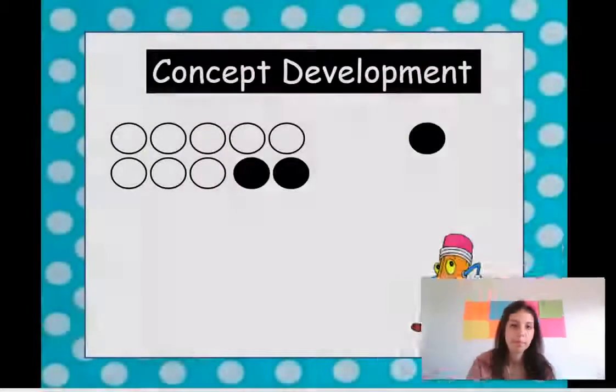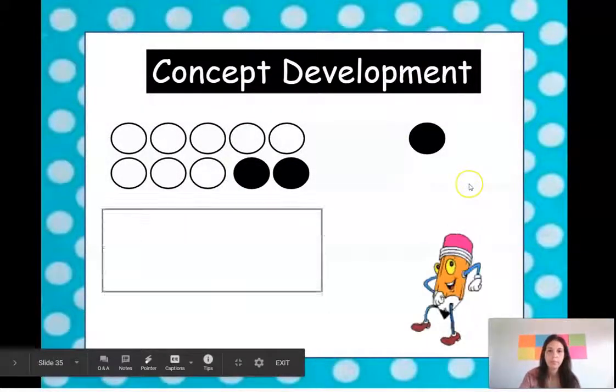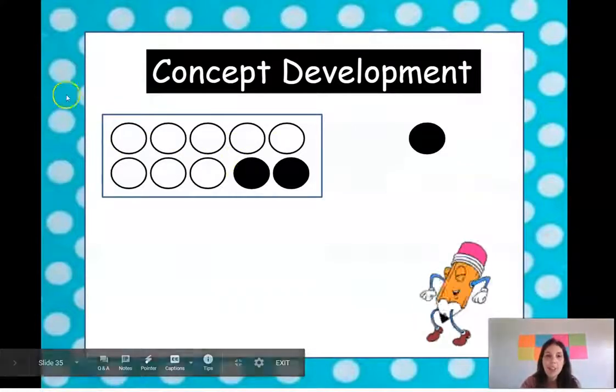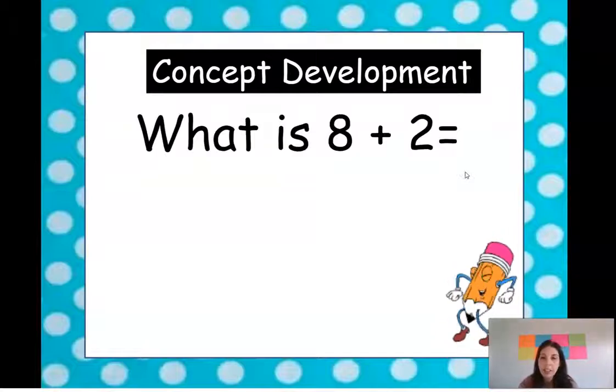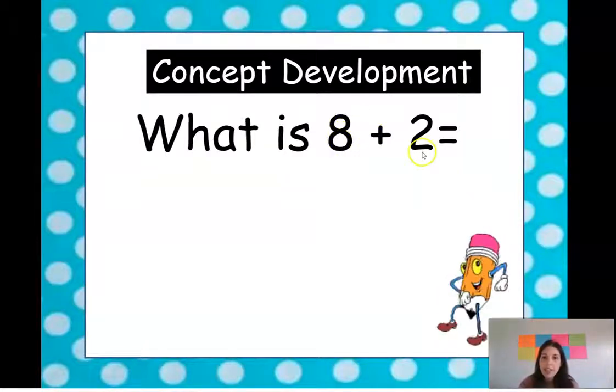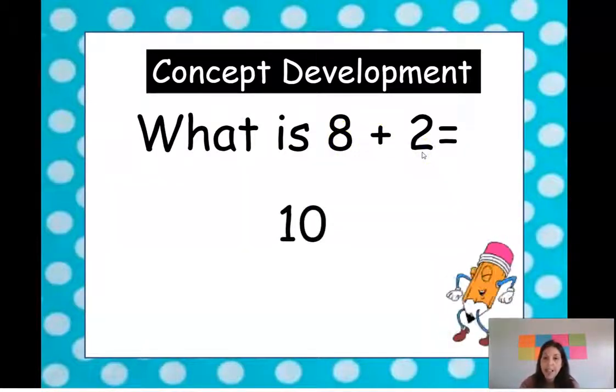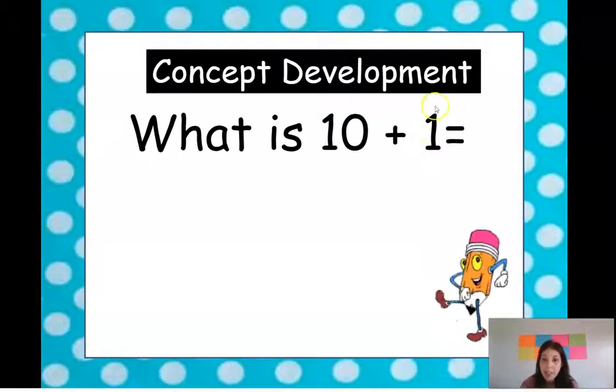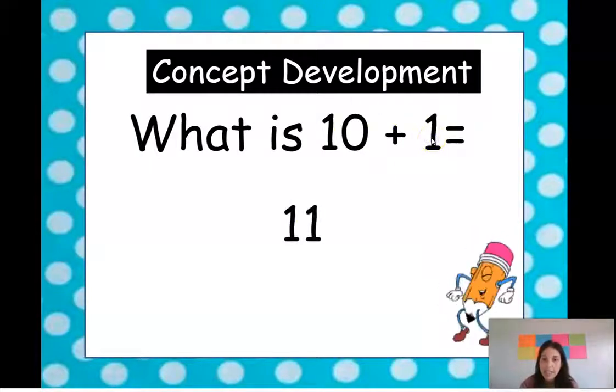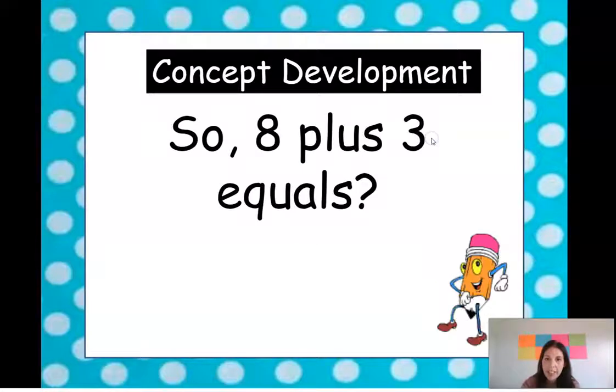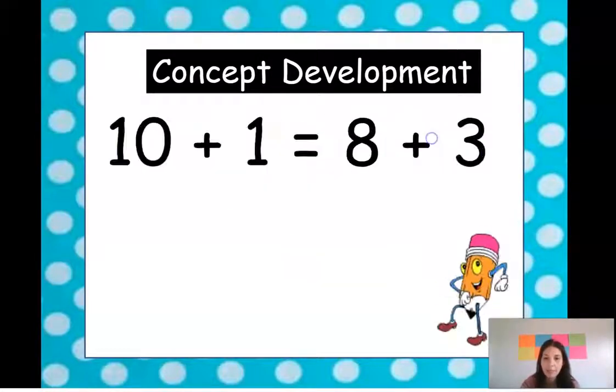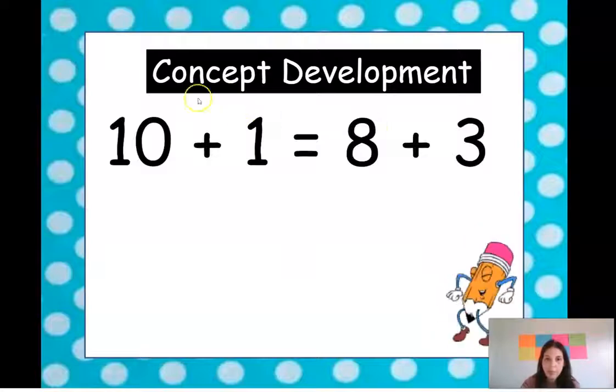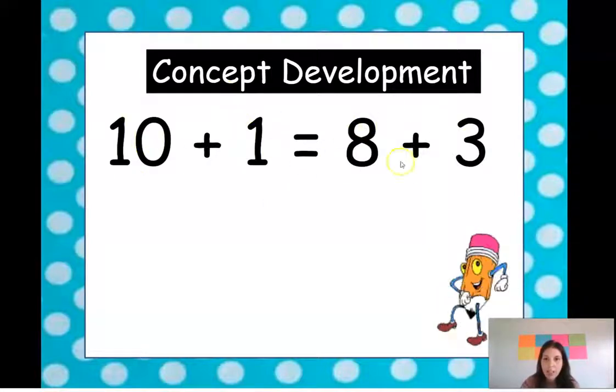Okay back to our power frame. And then of course we put our ten frame around it. So eight plus two is ten. Ten plus one is eleven. Very easy. So eight plus three equals eleven. These two equations are equal to each other.